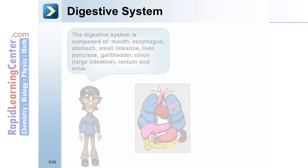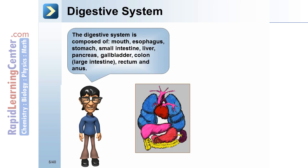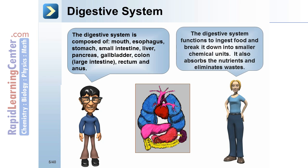Digestive system: the digestive system is composed of the mouth, esophagus, stomach, small intestine, liver, pancreas, gallbladder, colon, large intestine, rectum, and anus. It functions to ingest food, break it down into smaller chemical units, absorb nutrients, and eliminate waste.